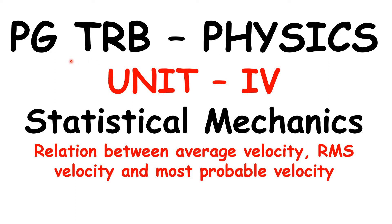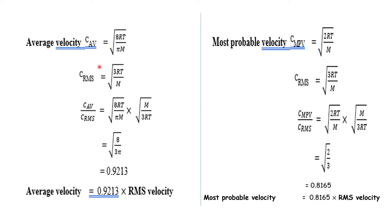Hi viewers, welcome to SS Academy channel for physics. Today we are going to discuss PG TRB Physics Unit 4, statistical mechanics. We already discussed in previous videos the relation between average velocity, root mean square velocity, and most probable velocity — the formulas and how to solve problems. This video is part of that series.